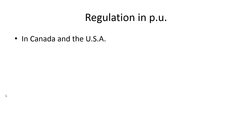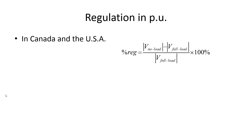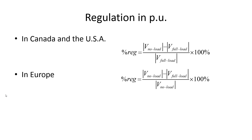Voltage regulation. We compute the regulation of a transformer by measuring the voltage at the terminals when fully loaded, then disconnecting the load and measuring the no-load voltage. In Canada and the US, the regulation is the difference divided by the full load voltage. In Europe, the same difference is compared to the no-load voltage. That's why the same transformer has different regulation values across the Atlantic.